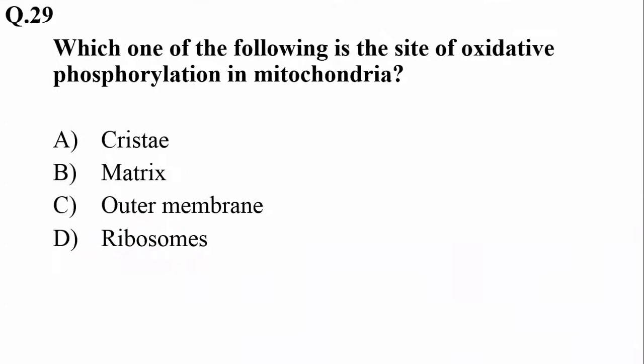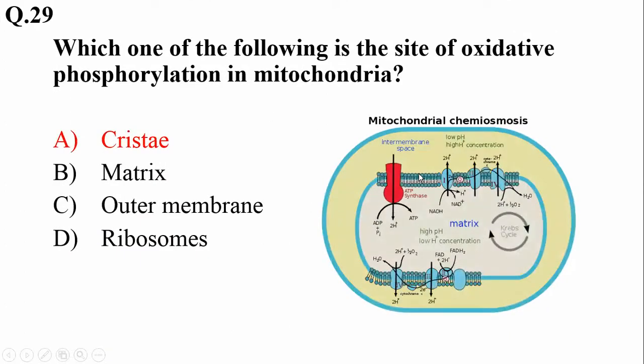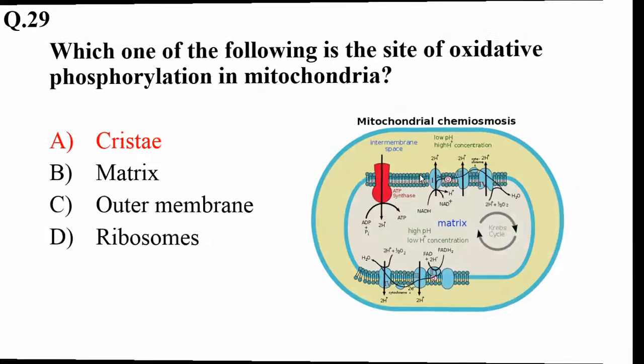Which of the following is the site of oxidative phosphorylation in mitochondria? It is definitely the cristae inner membrane. So the right option is A.